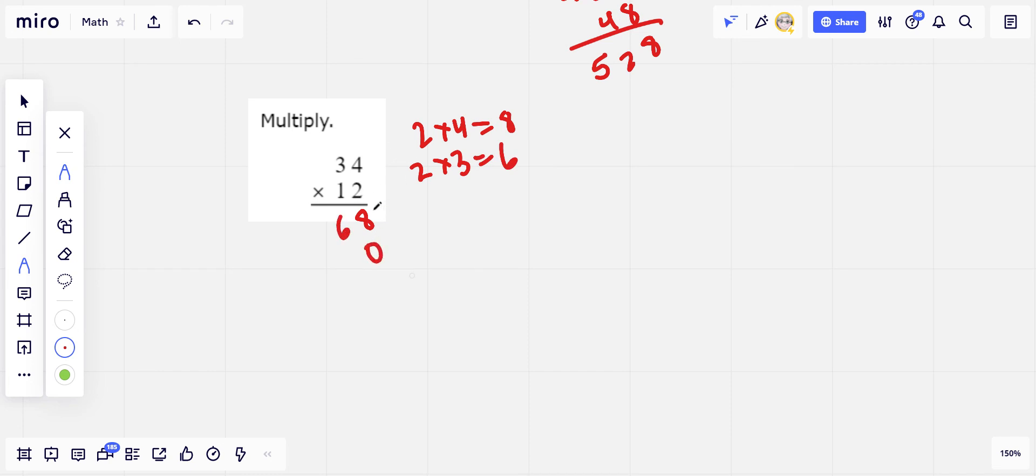Then we go down a row and put a zero in there, and then we've got 1 times this. Well, 1 times 4 is just 4, and 1 times 3 is 3. That's pretty easy. And we add it all up together. 8 and 0 is 8. 6 and 4 is 10, carry the 1, you get 408. Not too bad.